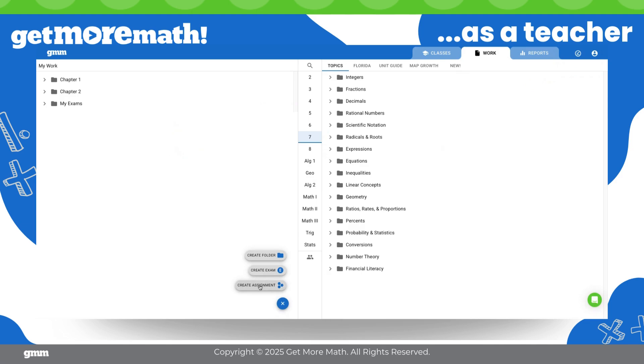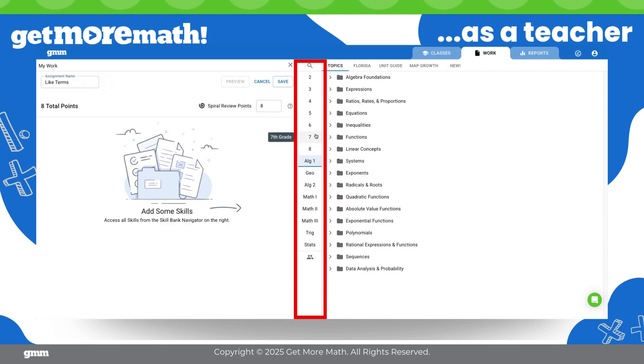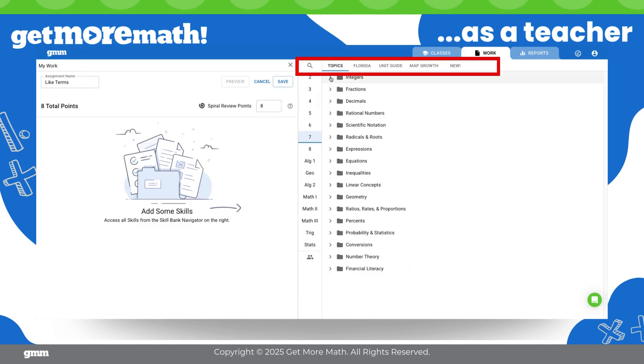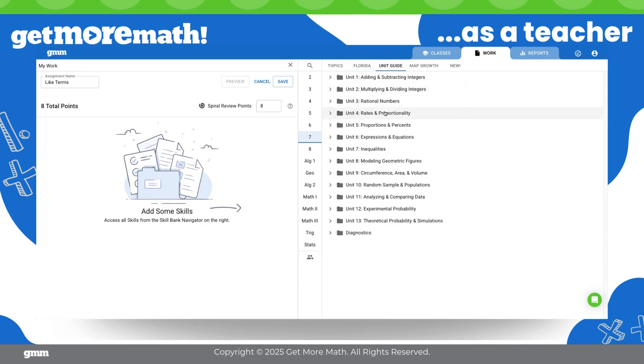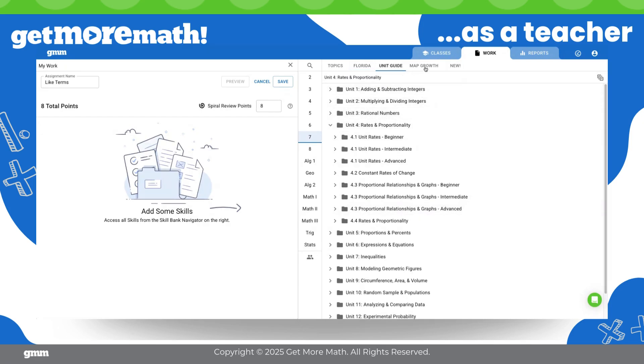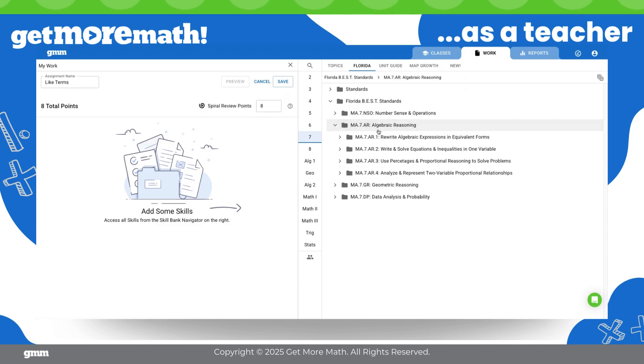Imagine I'm planning to teach a lesson on like terms. Here's how I would create an assignment for my students. You'll notice in the center that I have access to all grade levels so I can easily grab practice from above or below my assigned grade level. Across the top, I have several collections to choose from. Skills can be organized by topic, state standards, a unit guide that mimics the outline of a standard textbook, or our NWEA map growth collection. This collection provides a vertical alignment at each grade level based on your map growth scores. Today I'm going to look for the skills inside my state standards.